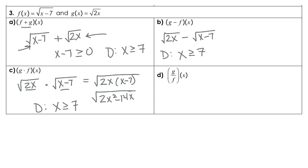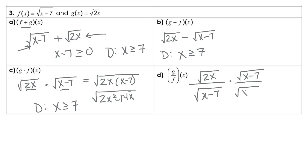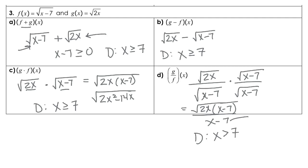For part d, you have function g of x — the square root of 2x — over function f — the square root of x minus 7. We do need to rationalize. In the numerator we have the square root of 2x times x minus 7, and in the denominator we have just x minus 7. For the domain, just like previous we had x greater than or equal to 7, but this time x is just going to have to be greater than 7, because if we let x be 7, we would have a 0 in the denominator.